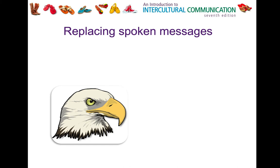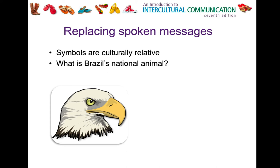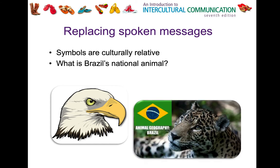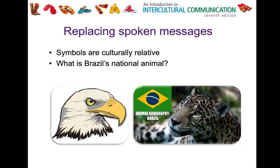Something like the bald eagle represents the United States, but this isn't the case for every group. For example, Brazil's national animal is the jaguar, which was brought to their opening ceremonies during the Olympics held in Brazil. That's a good example of a symbol representative of a specific cultural group.